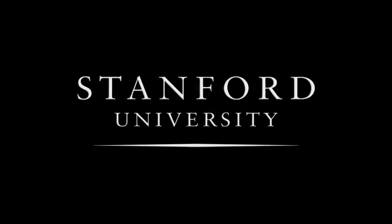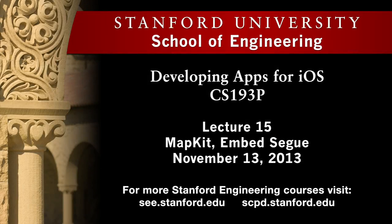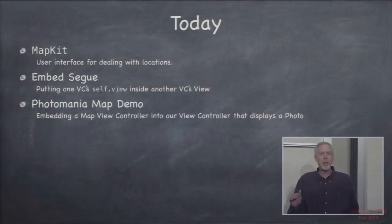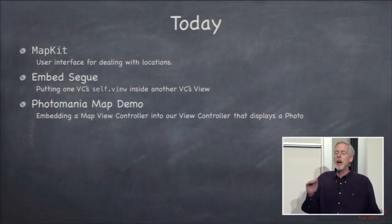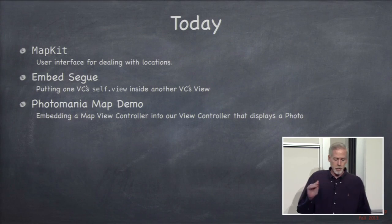Stanford University. Welcome to lecture 15 of CS193P for fall of 2013-14. Our primary topic today is going to be Map Kit, which is kind of the UI on what we talked about on Monday.